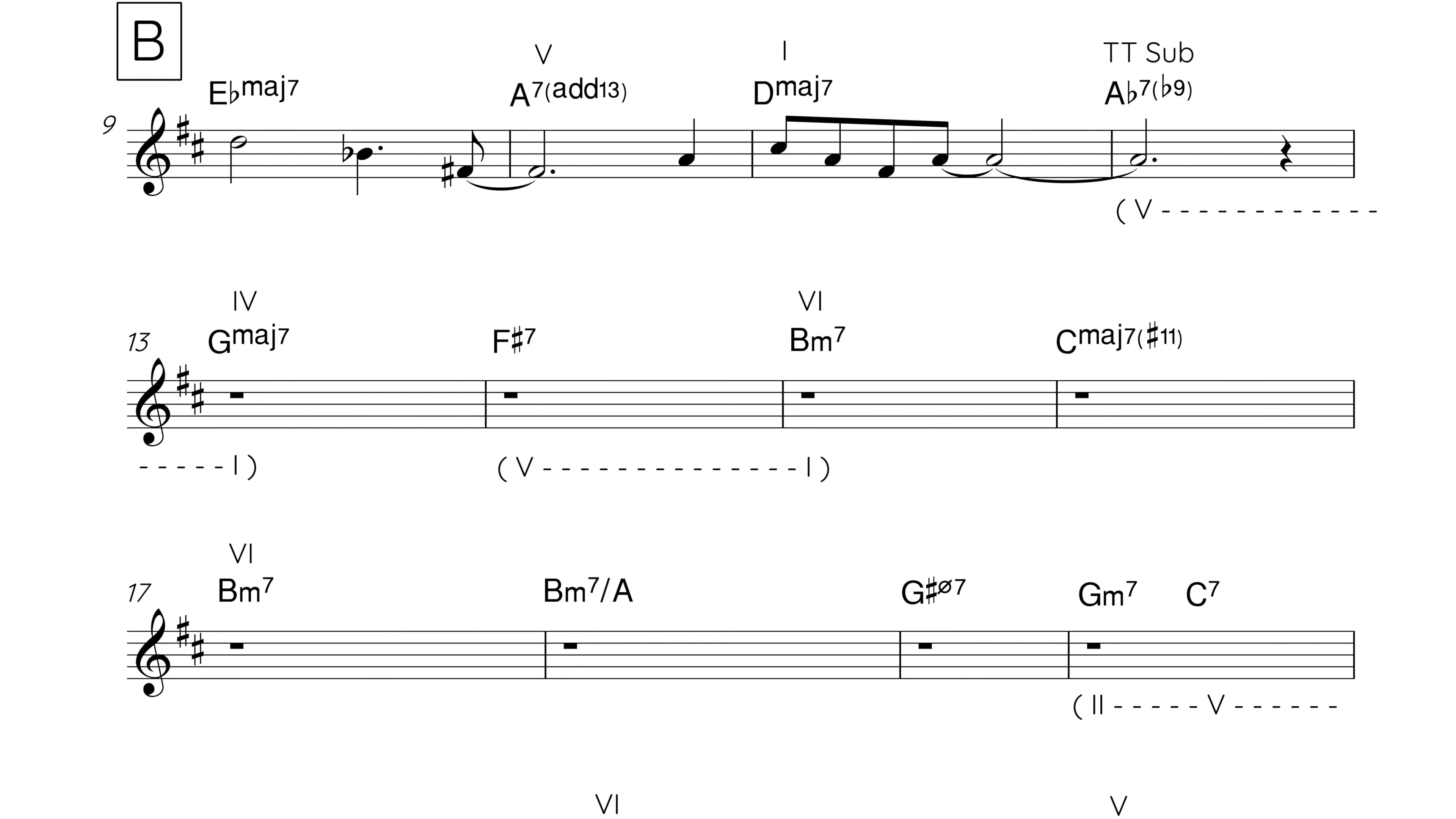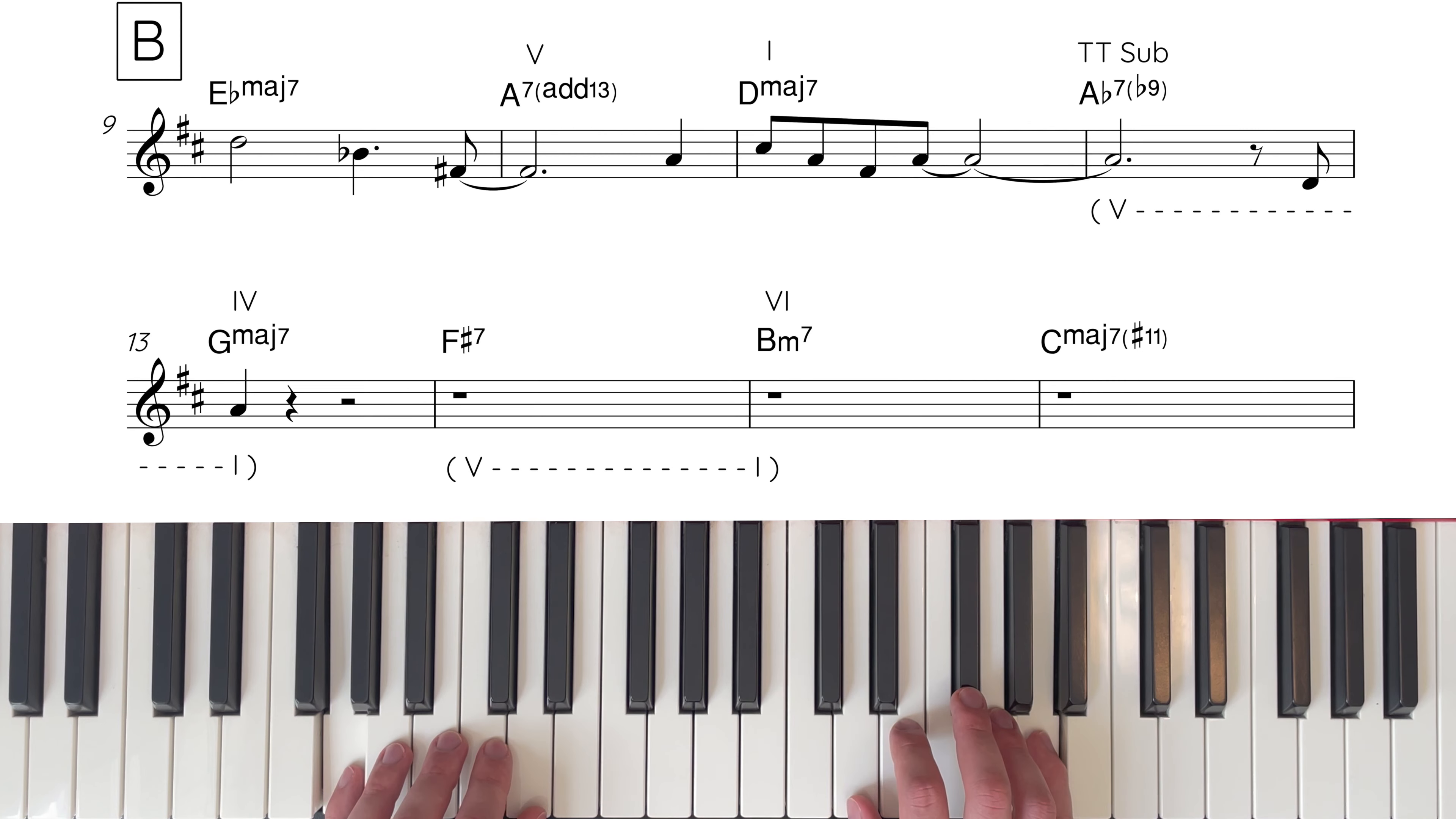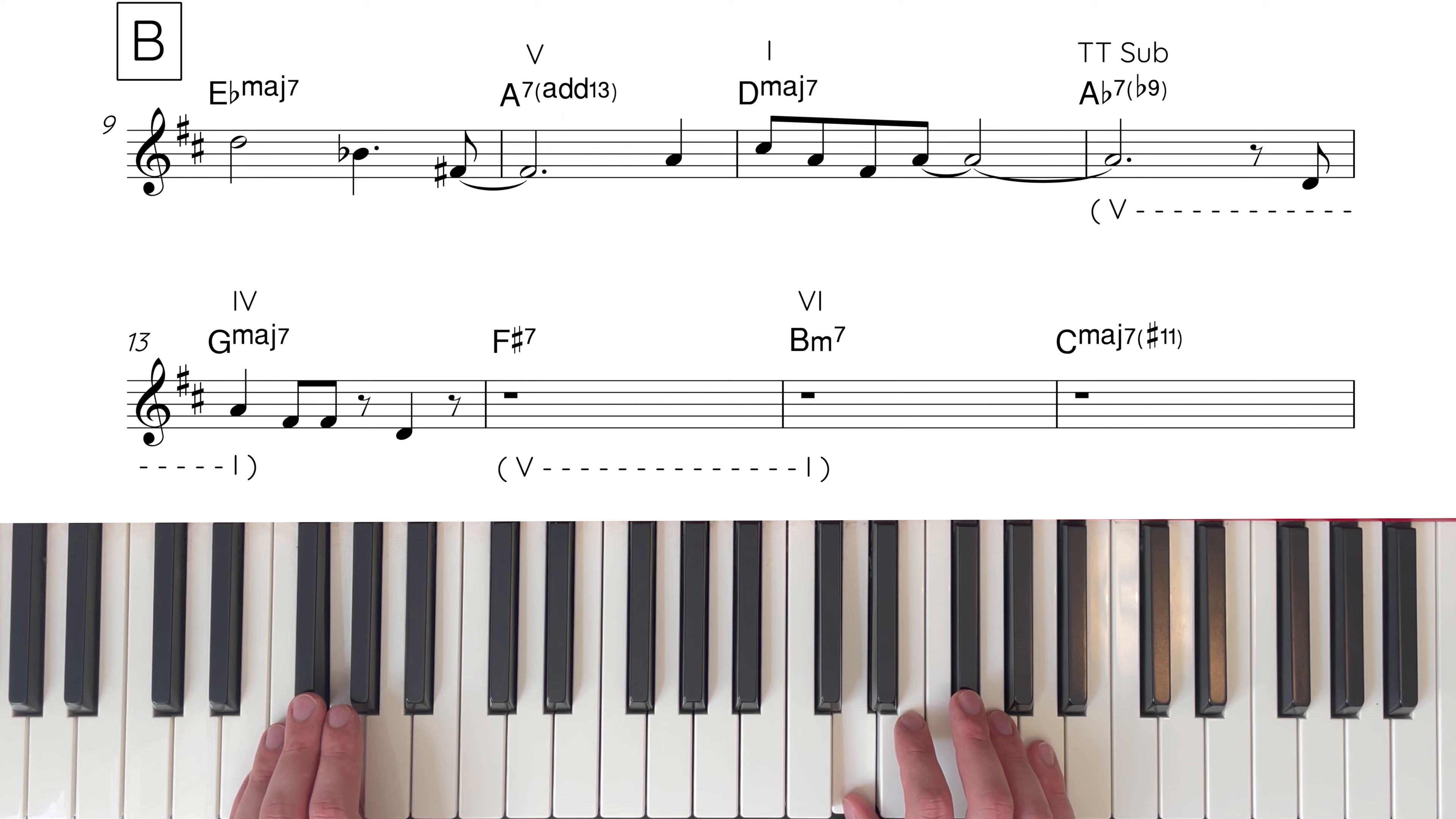Whilst we're here we should tweak some of the chord spellings to reflect the melody. E flat major 7 in the first bar is all good but seen as the only melody note in the A7 bar is the 13 we should put this as an extension in the chord symbol A7 13. The D major 7 chord in the next bar is all good but seen as the melody note in the following bar is an A we need to put this in the A flat 7 chord symbol. The A here is the flat 9 so the chord symbol becomes A flat 7 flat 9. Cool! So now let's hear the first line in time on the piano.